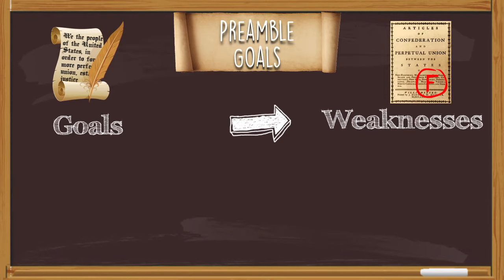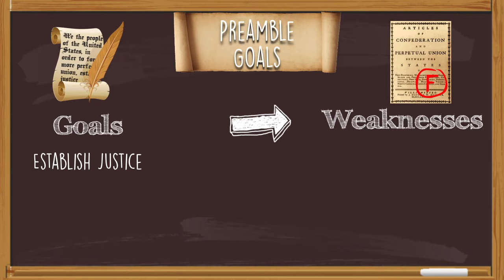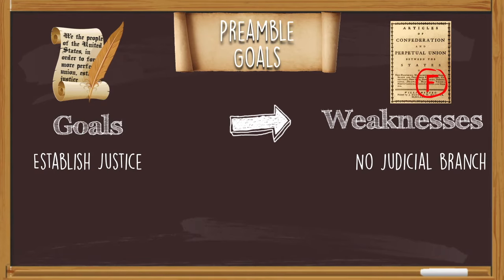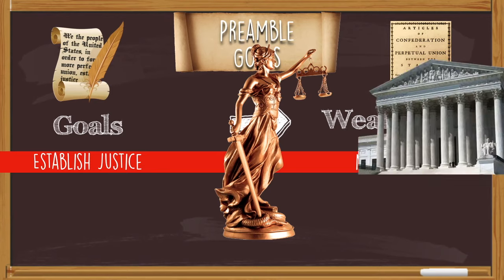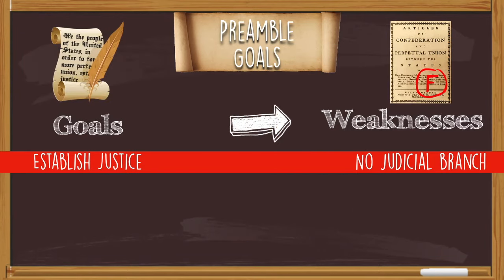The first goal listed in the preamble is to establish justice. Under the Articles of Confederation, did we not have any kind of justice system? The short answer is we had justice, but the long answer is there was no judicial branch. The Articles of Confederation only had one branch of government. So the new goal of establishing justice means we're going to have a Supreme Court to interpret the laws for the entire country.